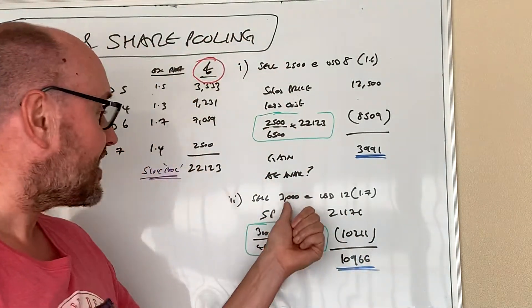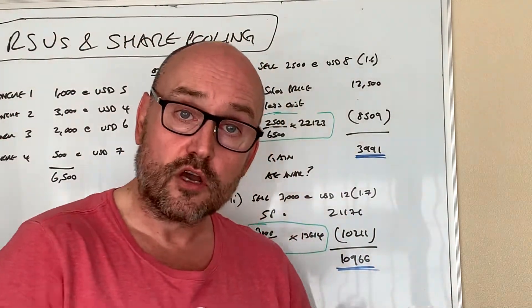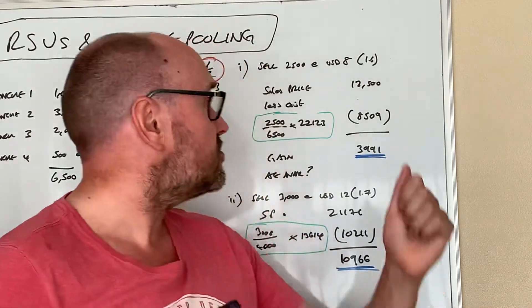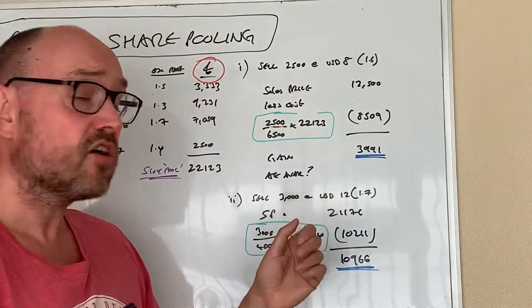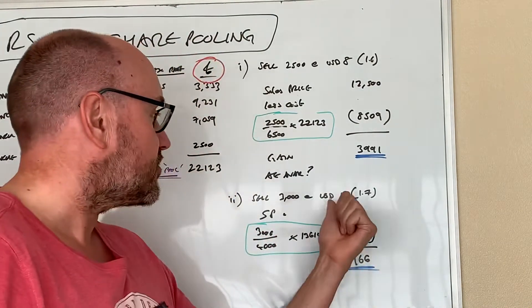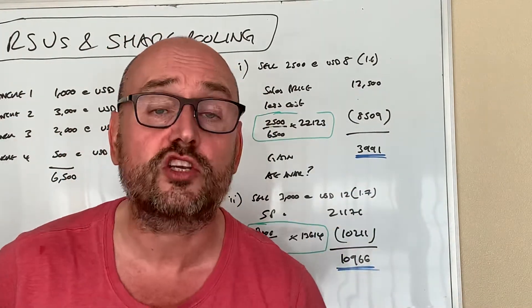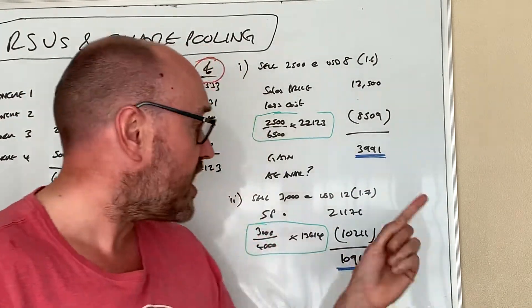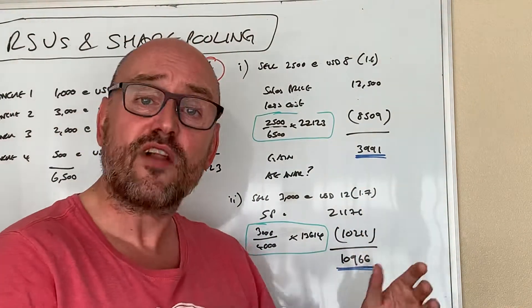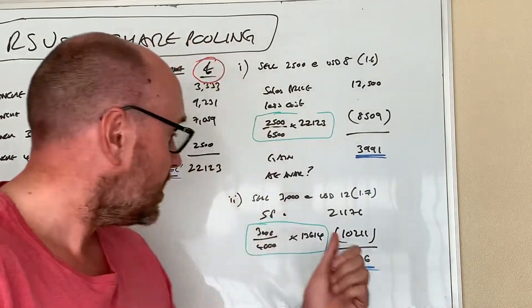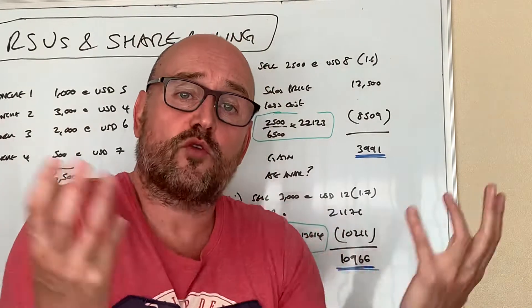This time he decides to sell three thousand. Remember he started off with six and a half thousand, sold two and a half, and he says look, I'm going to sell another three. The time is right, the stock price is twelve dollars, it's got up to twelve US dollars per share, exchange rate 1.7. I think I'm going to get rid of them in the marketplace.